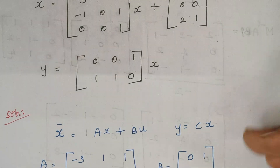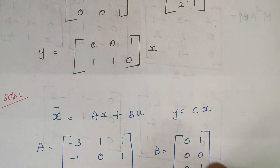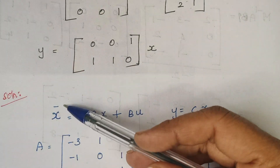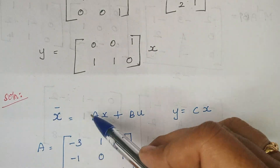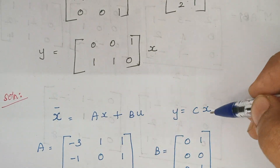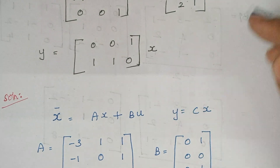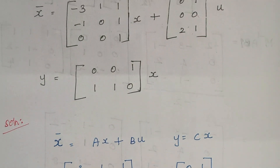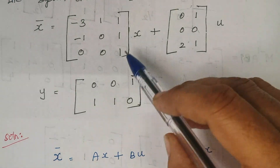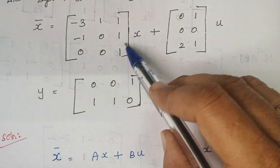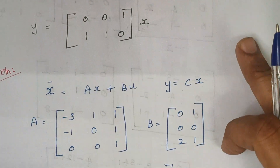Here the first thing is x-dot, represented as x-bar — both mean the same. It is equal to Ax plus Bu, and y is equal to Cx. Based upon these parameters we are writing our A, B, and C matrices. This is your A matrix, this is your B matrix, and this is your C matrix.